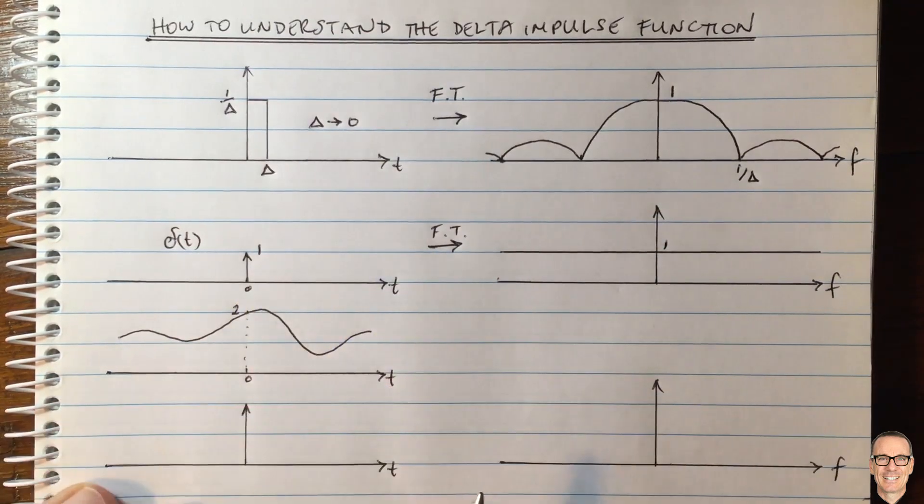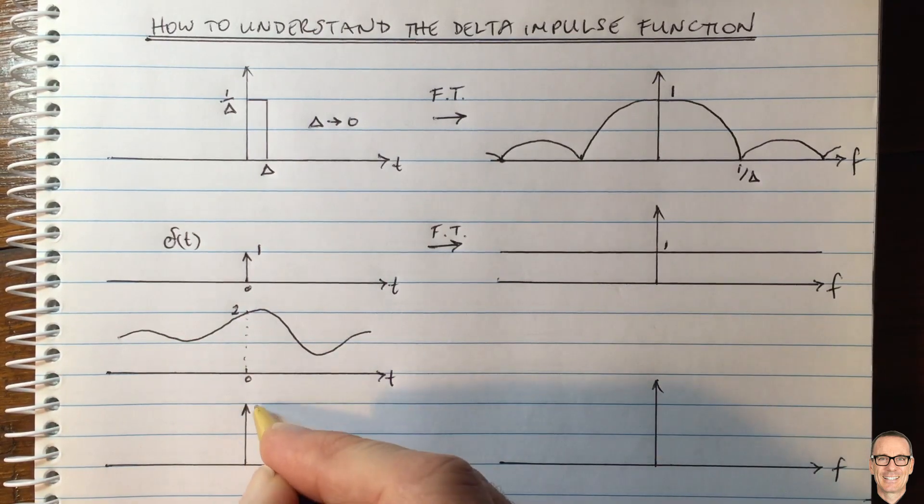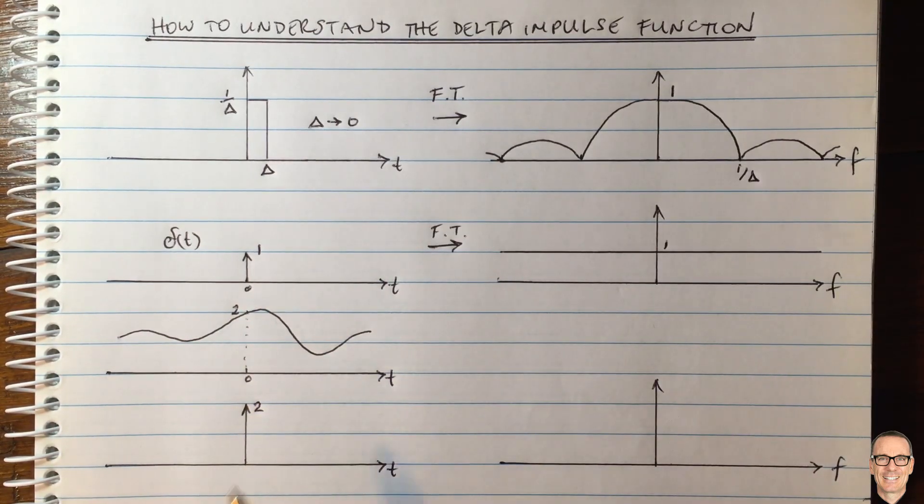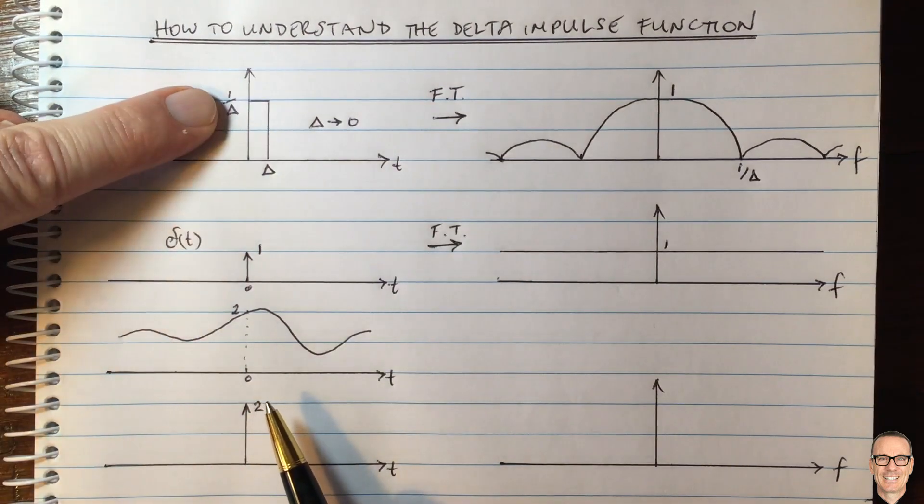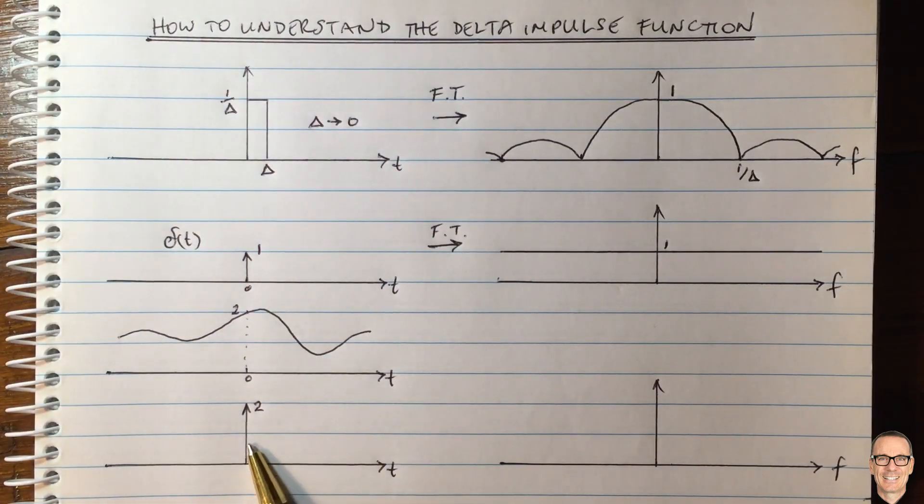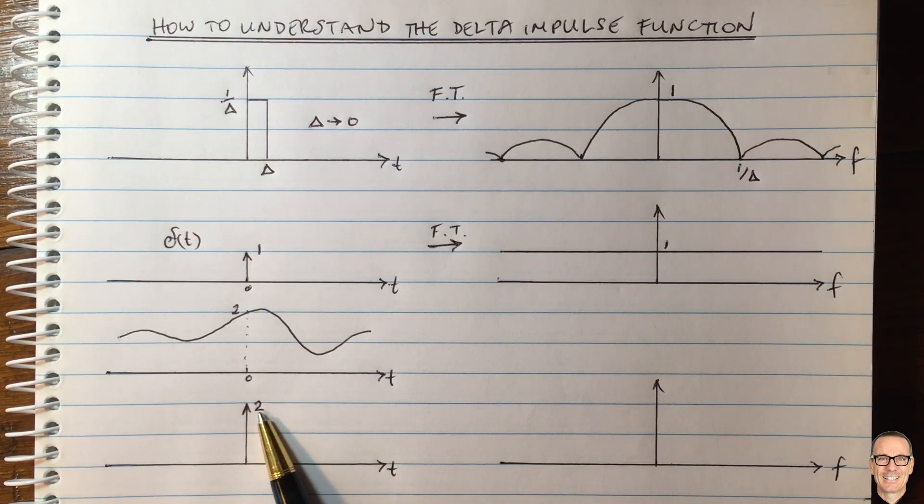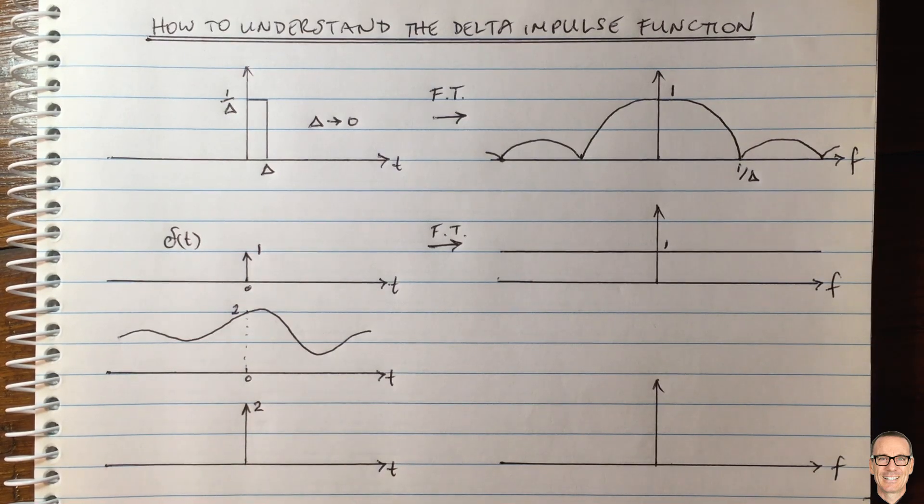When we multiply those things together, we often draw a delta function of height 2. What does it mean? The actual delta function has infinite height. Don't forget, we just draw it with a height that is related to this number. Let's go back and think about this picture here.